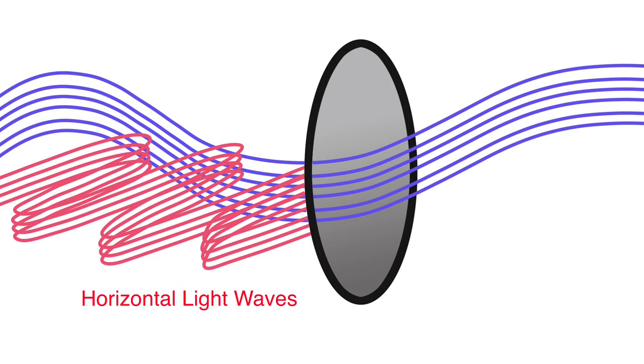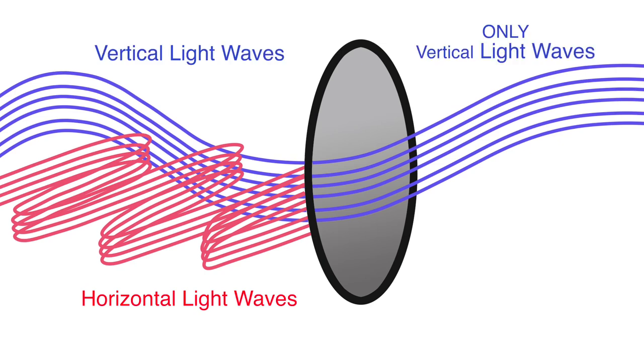When making sunglasses, manufacturers align that film so that the coating will be vertical. The polarized lenses in our sunglasses only allow vertical light to pass through, thereby cutting the horizontal light and not allowing it to pass through the lens. Since the reflected light we view as glare is horizontal, the filter reduces that glare reaching our eyes. In photography, the polarizer filter does just that — it reduces glare.